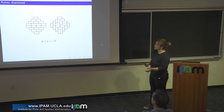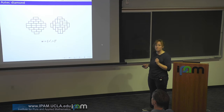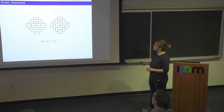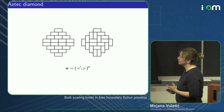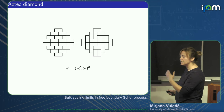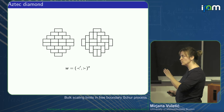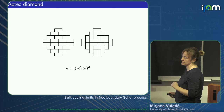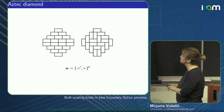Another model studied in the Schur context is the Aztec diamond. There is a way to put particles and holes on these domino tilings. When we read these particles and holes diagonally, each diagonal is a Maya diagram corresponding to some partition. For the Aztec diamond, these partitions differ by a horizontal strip in one step and by a vertical strip in another — we alternate between horizontal and vertical strips.